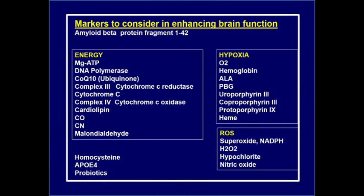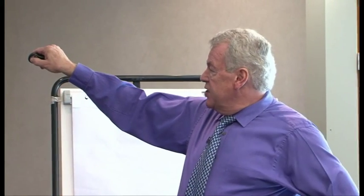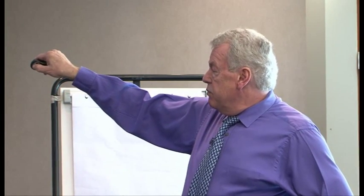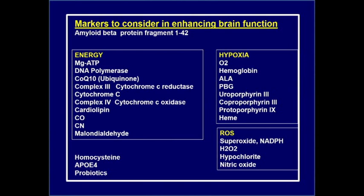Looking at oxygen and its lack in the mitochondria for energy production, we use oxygen as a marker, hemoglobin to see whether oxygen isn't being carried, and the cofactors for making heme — ALA, PBG, uroporphyrinogen, coproporphyrinogen, protoporphyrinogen, and heme itself. For reactive oxygen species, the markers include superoxide, NADPH to make superoxide anion, hydrogen peroxide, hypochlorite, and nitric oxide. From those markers you can build the full family of reactive oxygen species and their relationship to different colours associated with the oxygen molecules.